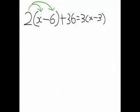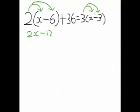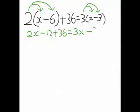The arrows are showing how we're applying the distributive rule. Now we're doing 3 times x minus 3 times 3, which is negative 3. So that gives us 2x minus 12 plus 36. On the other side of the equal sign, that would be 3x minus 9.